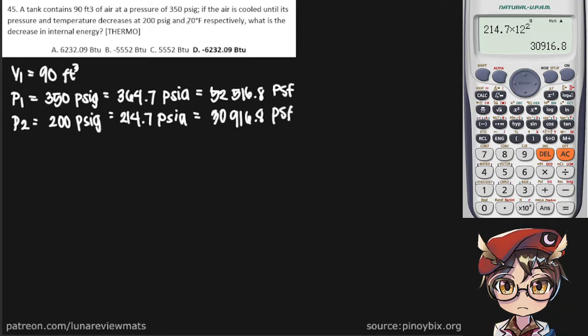And 70 degrees Fahrenheit respectively. That's our T2, which is 530 degrees Rankine. Respectively, what is the decrease in internal energy in BTU?